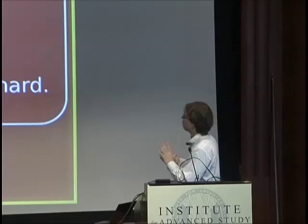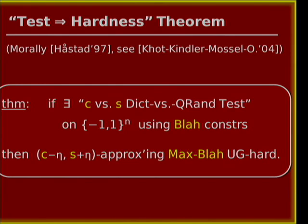Håstad did it by exploiting the distinction between dictators and quasi-random Boolean functions. In particular, he used what I'll call the test-implies-hardness theorem: if there exists a C-vs-S dictator-versus-quasi-random test using blah constraints, then C-vs-S approximating the Max-blah problem is UG-hard. The mysterious thing here is: what is a C-vs-S dictator-versus-quasi-random test?